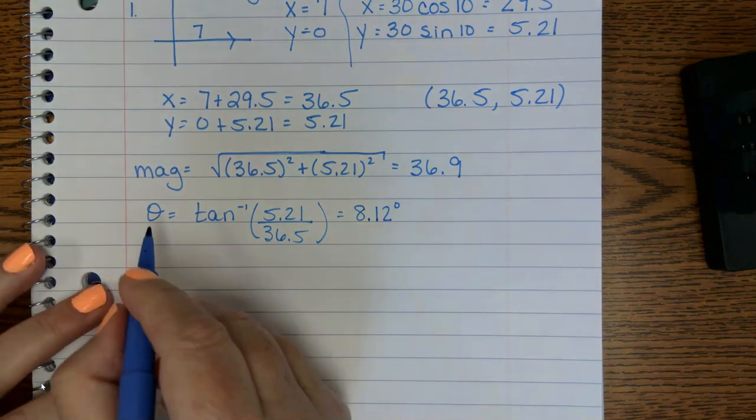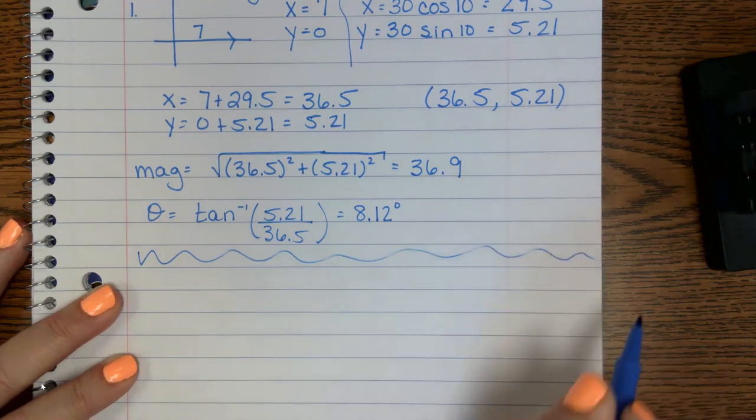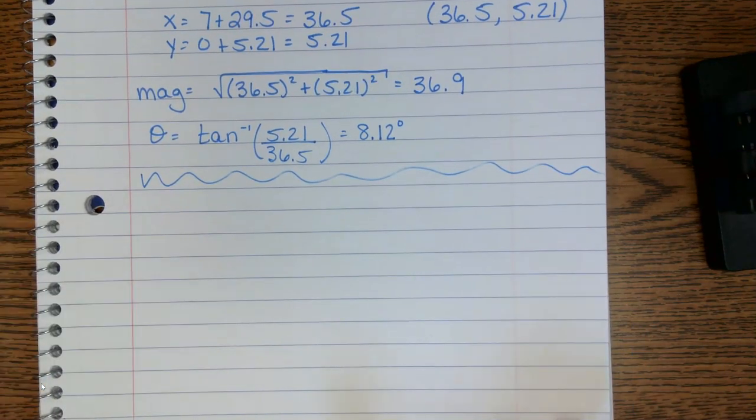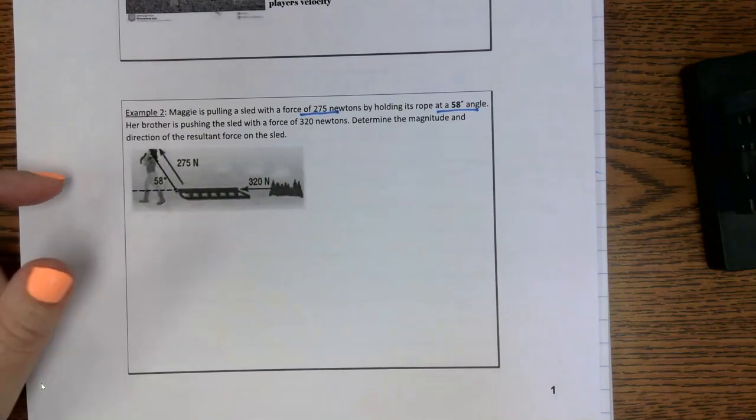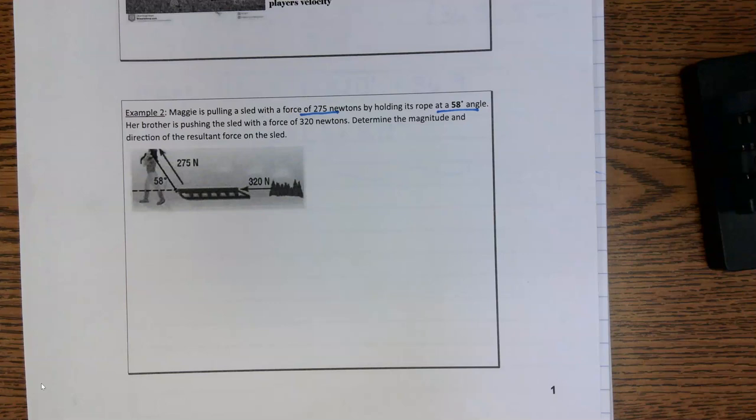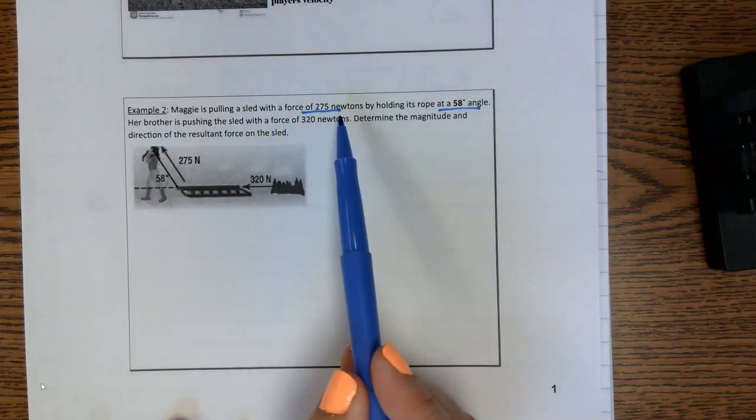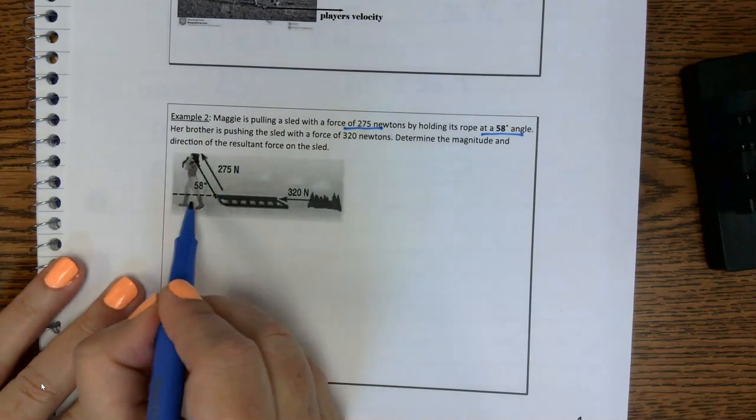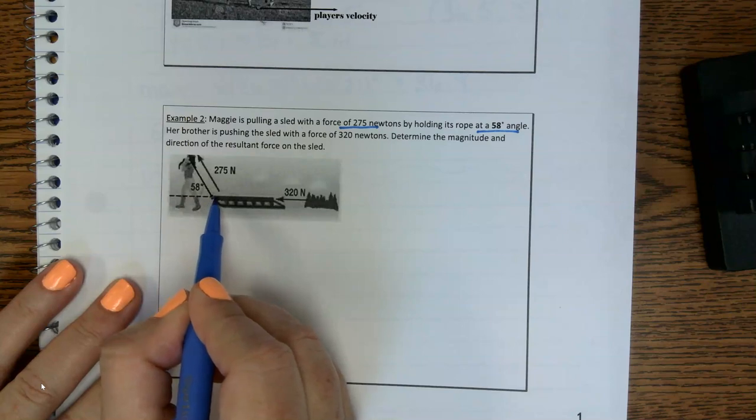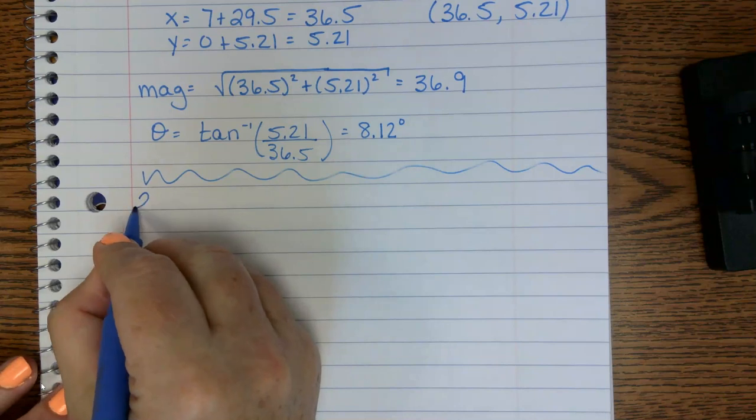And that is it. Not too bad. But yes, it's a little bit more steps, but you have to take each thing's component into play. So now number two. Maggie is pulling a sled with a force of 275 newtons by holding its rope at 58 degrees. Now here's where we're going to have to pay attention to the graph. Notice, and I'm going to redraw this, so number two.